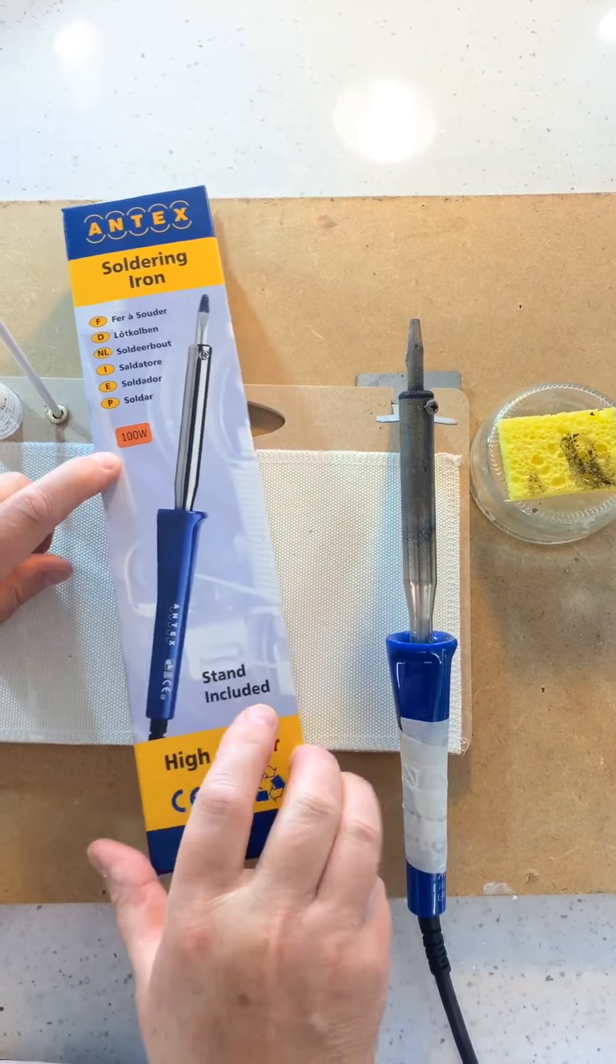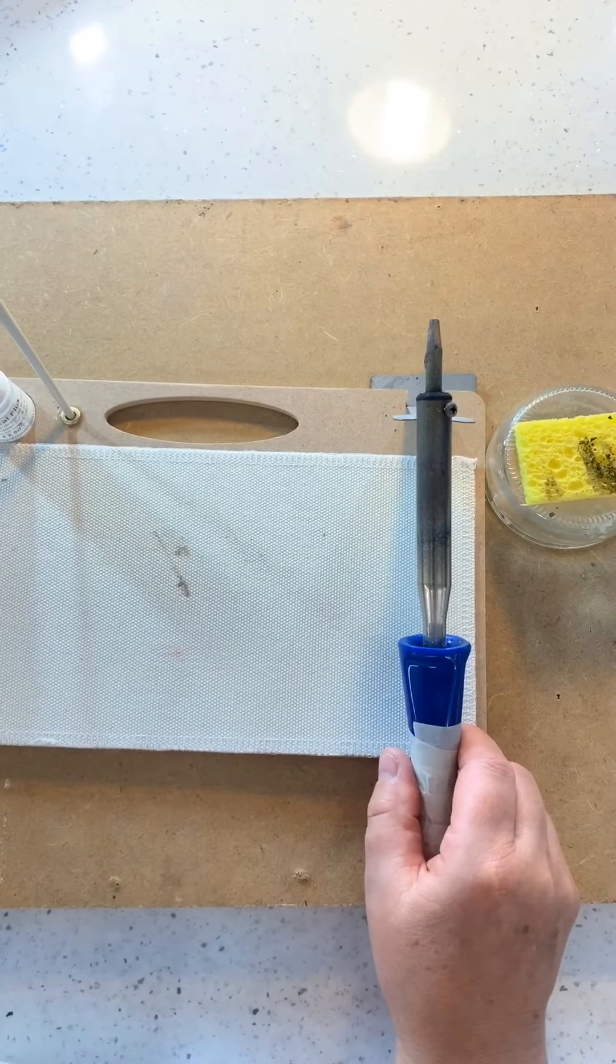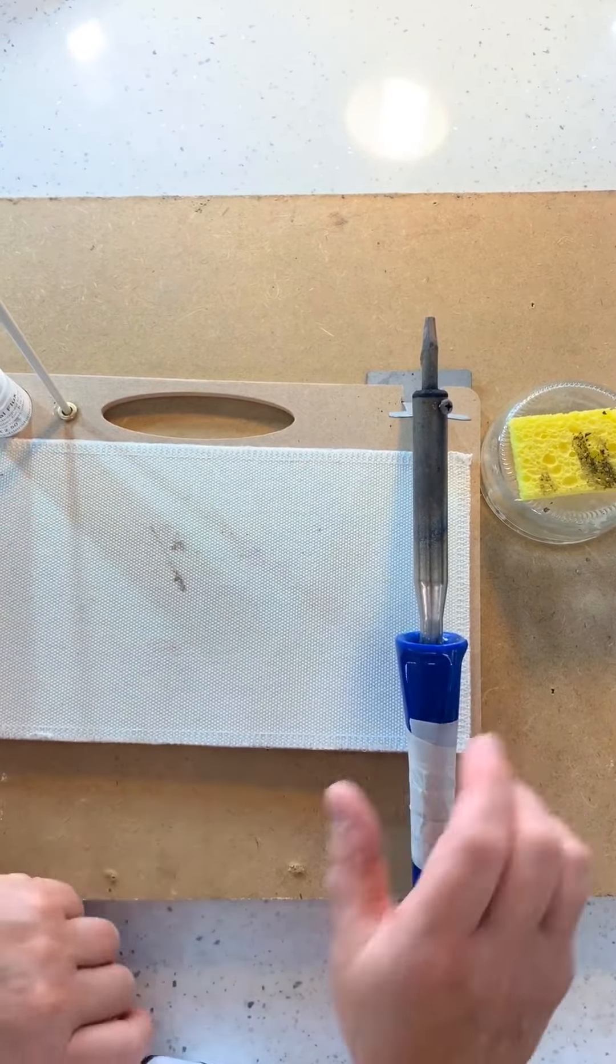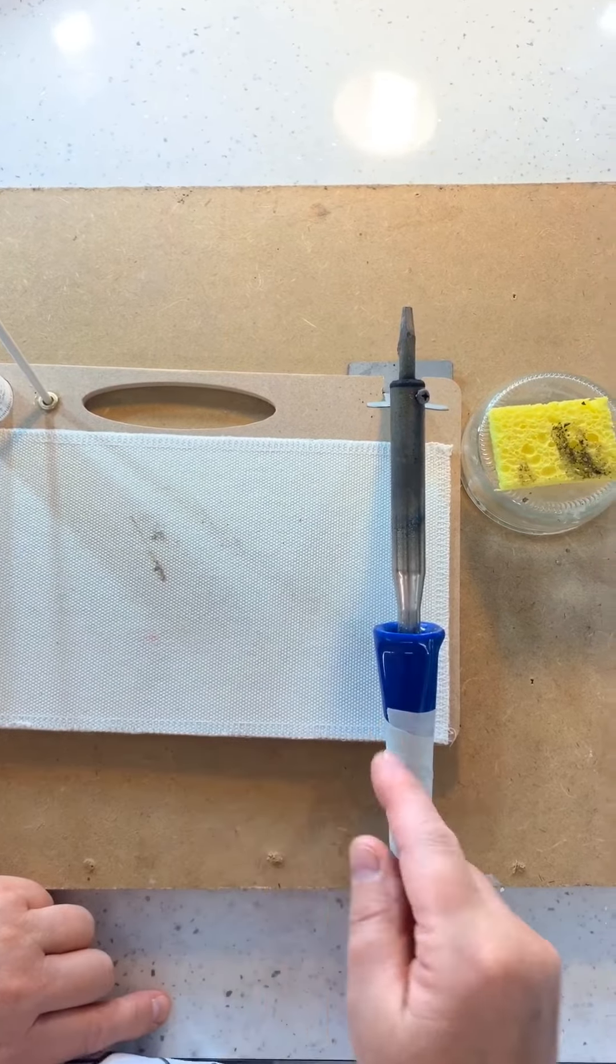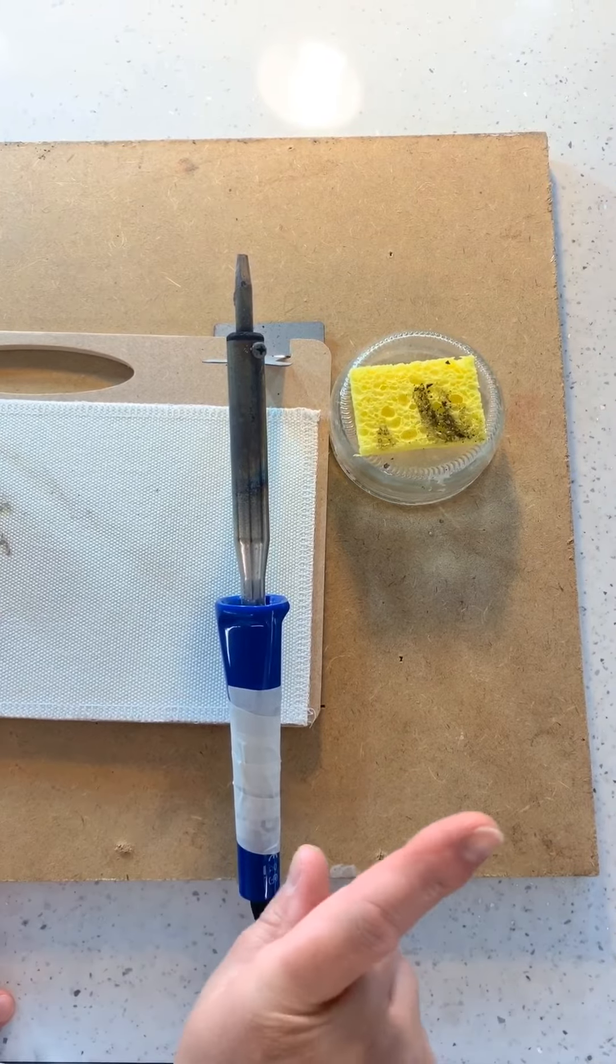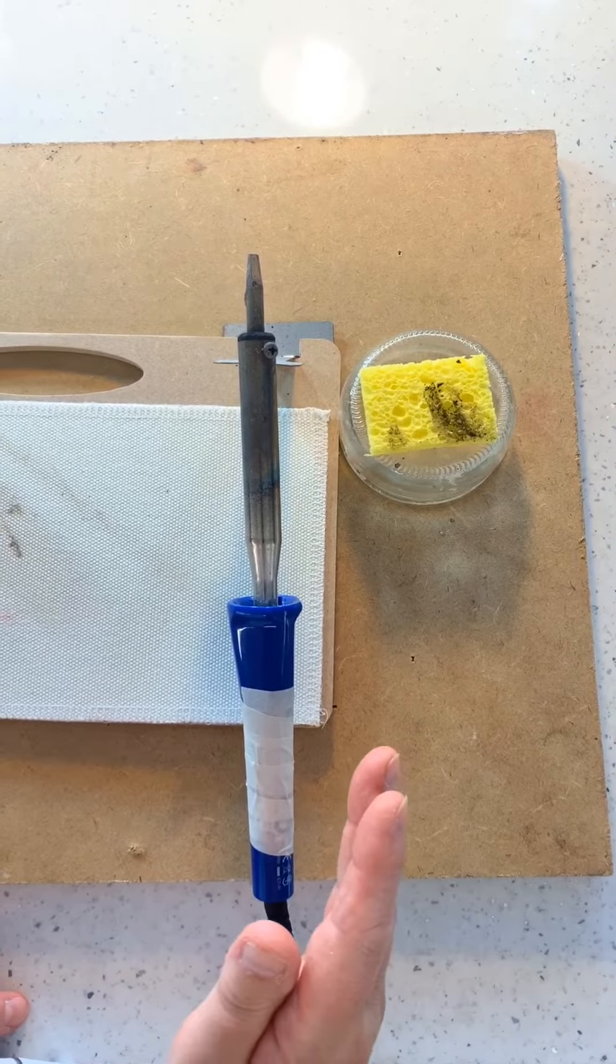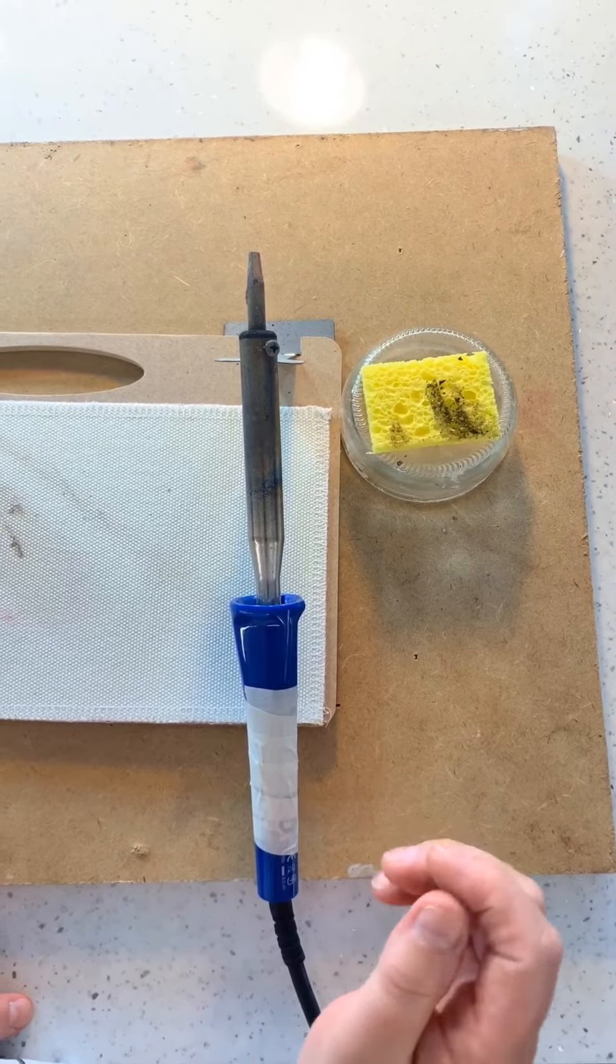Now the stand is very important. It keeps our soldering iron away from the board and it's safe. The wires come down to the bottom and go down and back to your socket. So you must be aware where your wire is so you don't pull it.